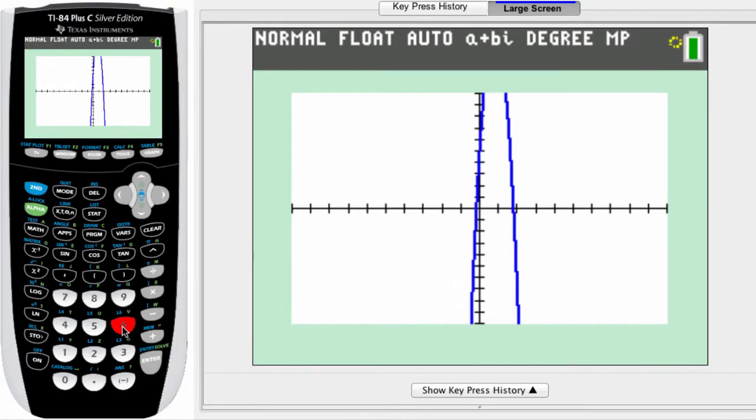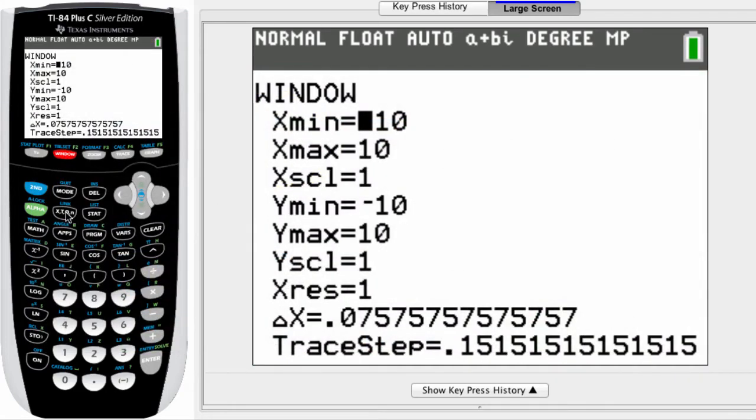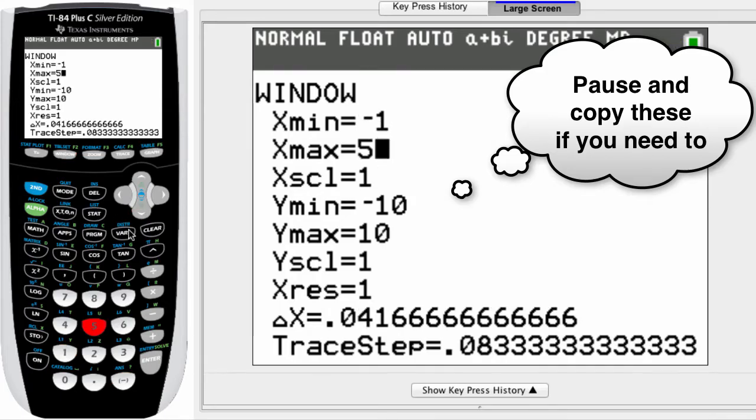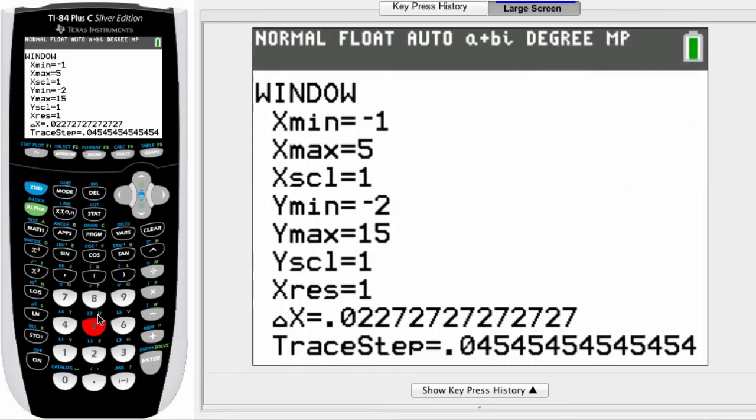So here's what the graph looks like. It's kind of hard to see where the x and y-intercepts are, so we're gonna change the dimensions of the window. Begin by pressing the window key and we're gonna change it to the following. Okay, let's try this. Hit the graph key.